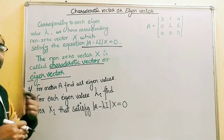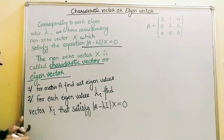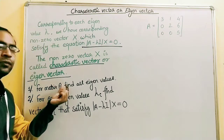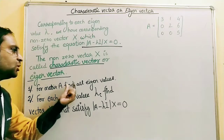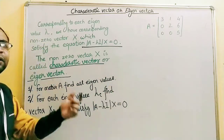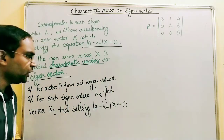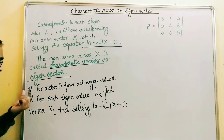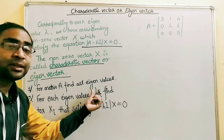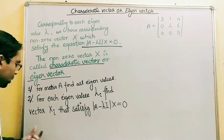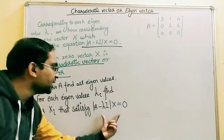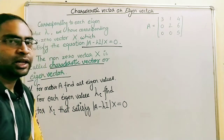How can we calculate the eigenvectors? It's a two-step process. Step one: for matrix A, first we need to find all eigenvalues — we already discussed this in the previous video lesson. Step two: for each eigenvalue lambda_i, we need to find the vector x_i that satisfies the equation A minus lambda_i times I times x_i equals 0.